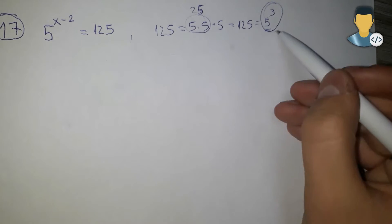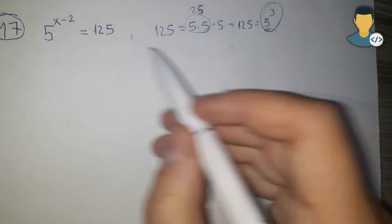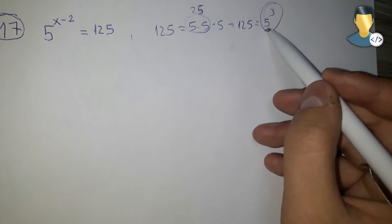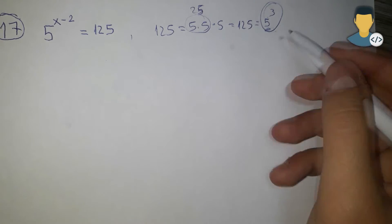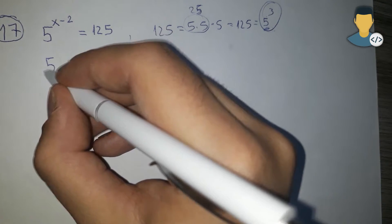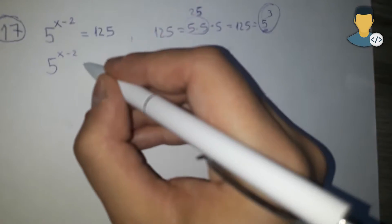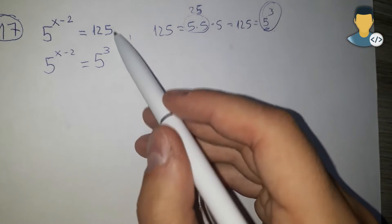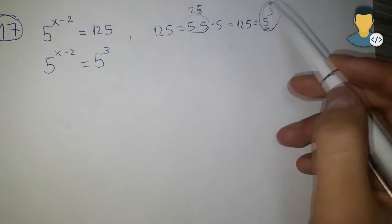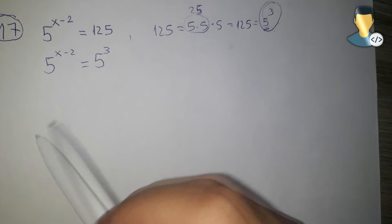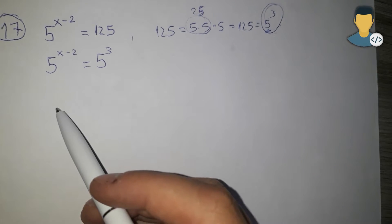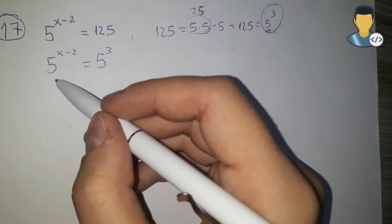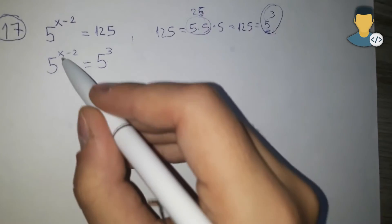And after that, we can go for the exponents to make the exponents same also. So we just replace the 125 with 5 to the third, which is the same we proved up here. And down here we have same bases, so we need to have same exponents.